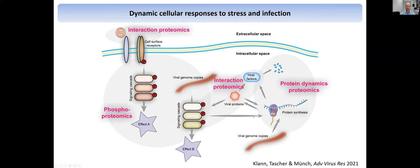There are a number of tools — here are some of the most common ones — and proteomics that can help us look at these different aspects: interaction proteomics for viral proteins with host factors, and protein dynamics, which I will focus on a lot. That actually required a lot of new method development to be able to look at protein translation and degradation by proteomics. And also for signaling cascades, for example, phosphoproteomics, where we can look at the phosphorylation state of thousands of proteins in the cell.